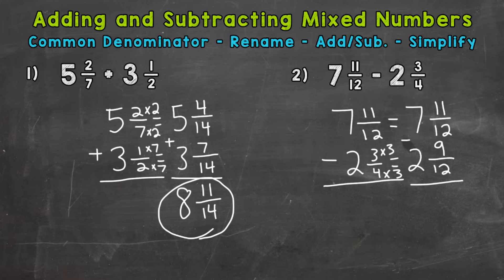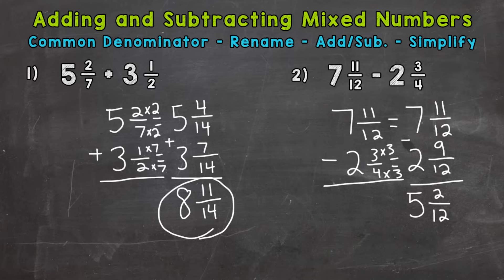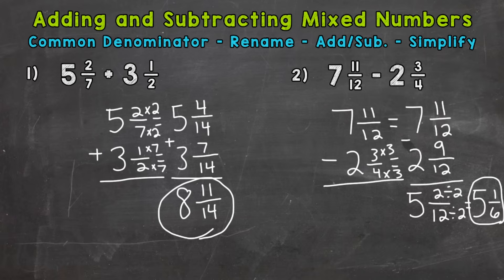To recap: we didn't have a common denominator, so we found one, renamed, and now we're ready to subtract. So 11 minus 9 gives us 2, and we have twelfths. Now do the whole numbers: 7 minus 2 is 5, and we get 5 and 2 twelfths. Before we finish, we always look to see if we can simplify the fractional part. We have a common factor of 2 between numerator 2 and denominator 12, so let's divide both by 2 to simplify. We get 5 and 1 sixth. And 1 sixth is in simplest form — the only common factor between 1 and 6 is 1. The final answer to number 2 is 5 and 1 sixth.